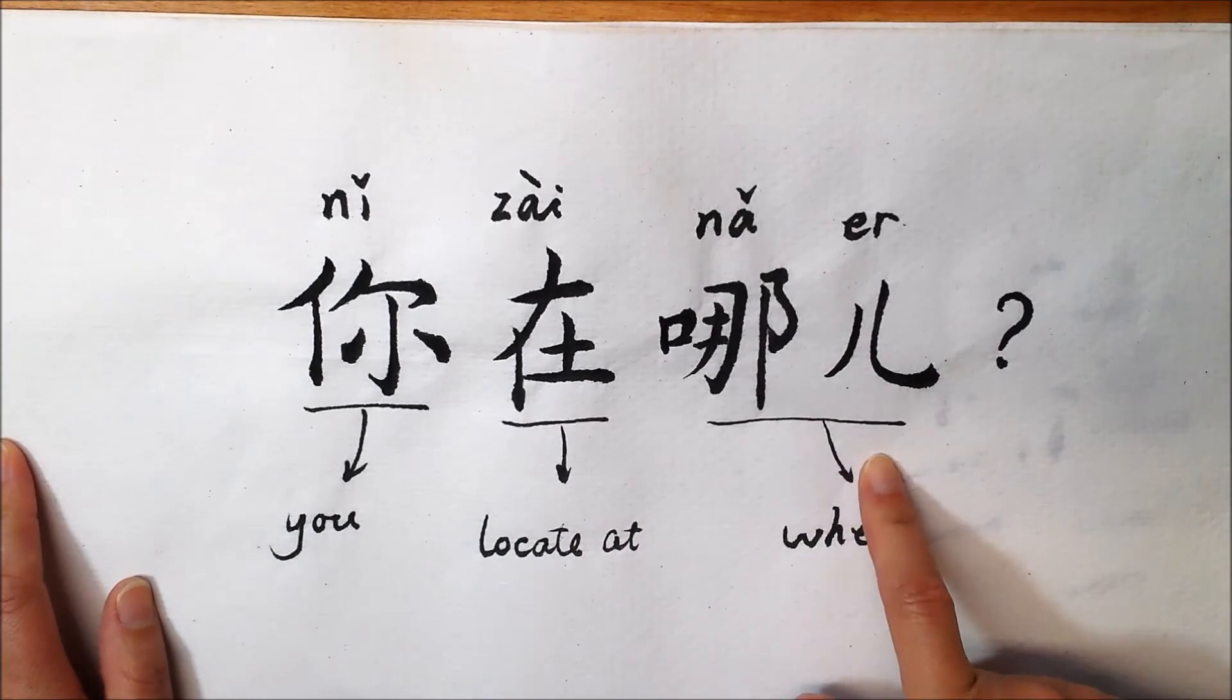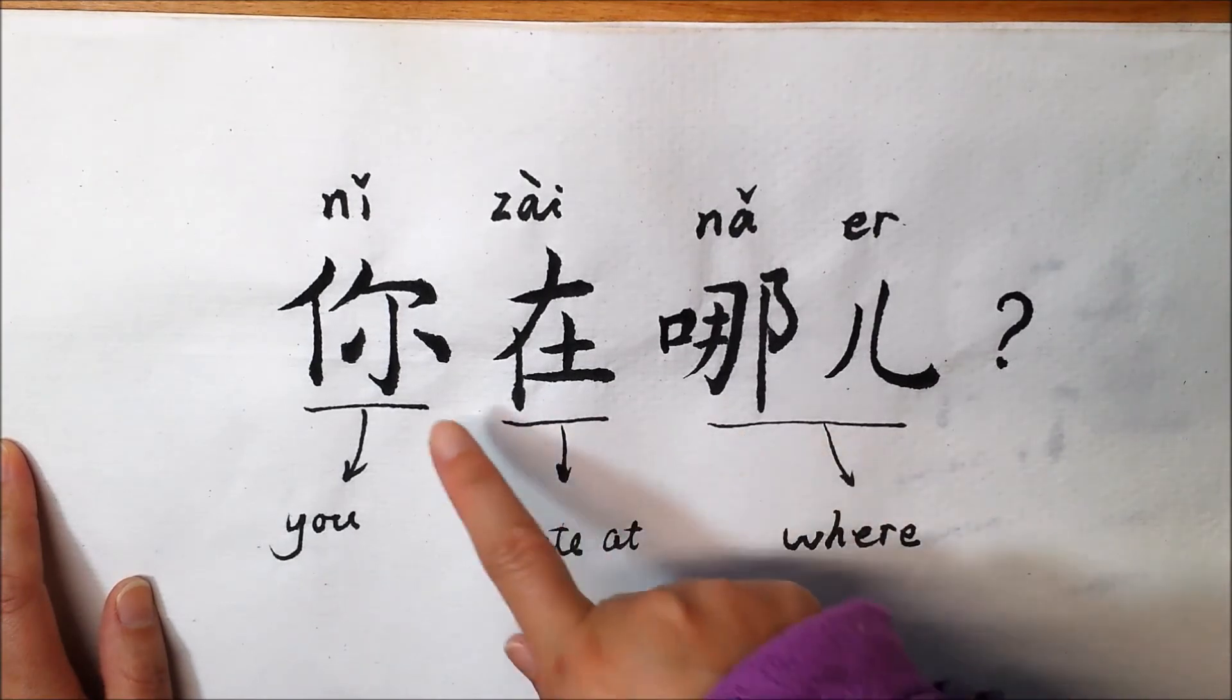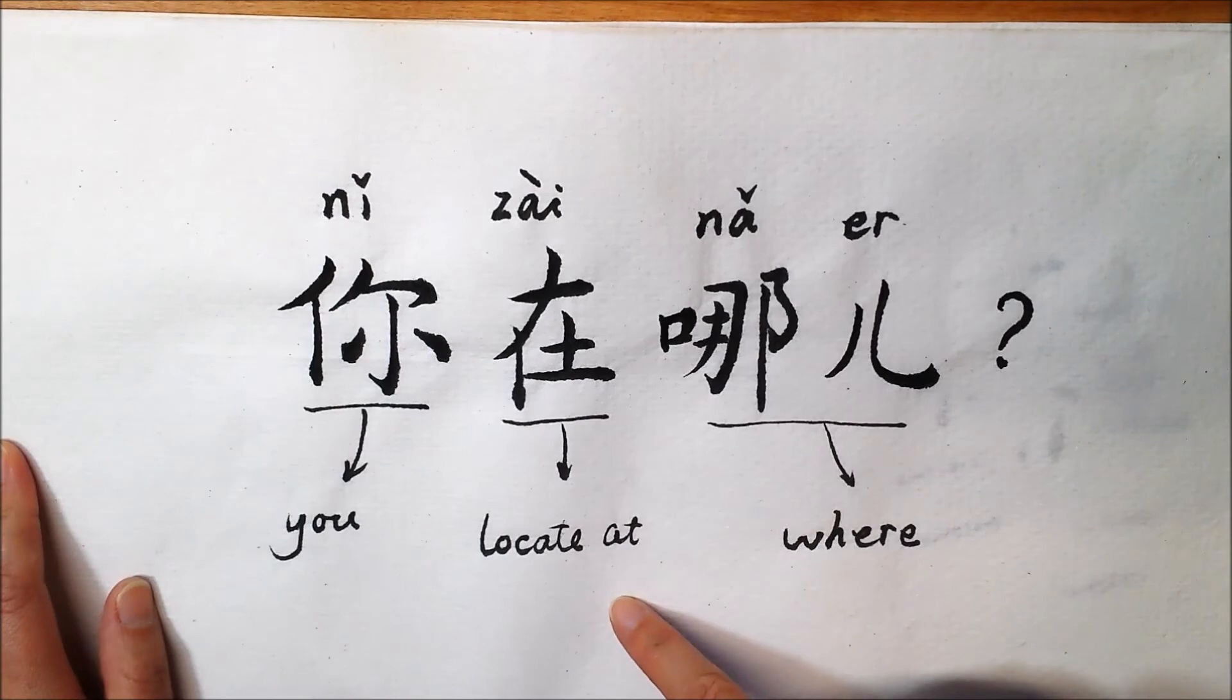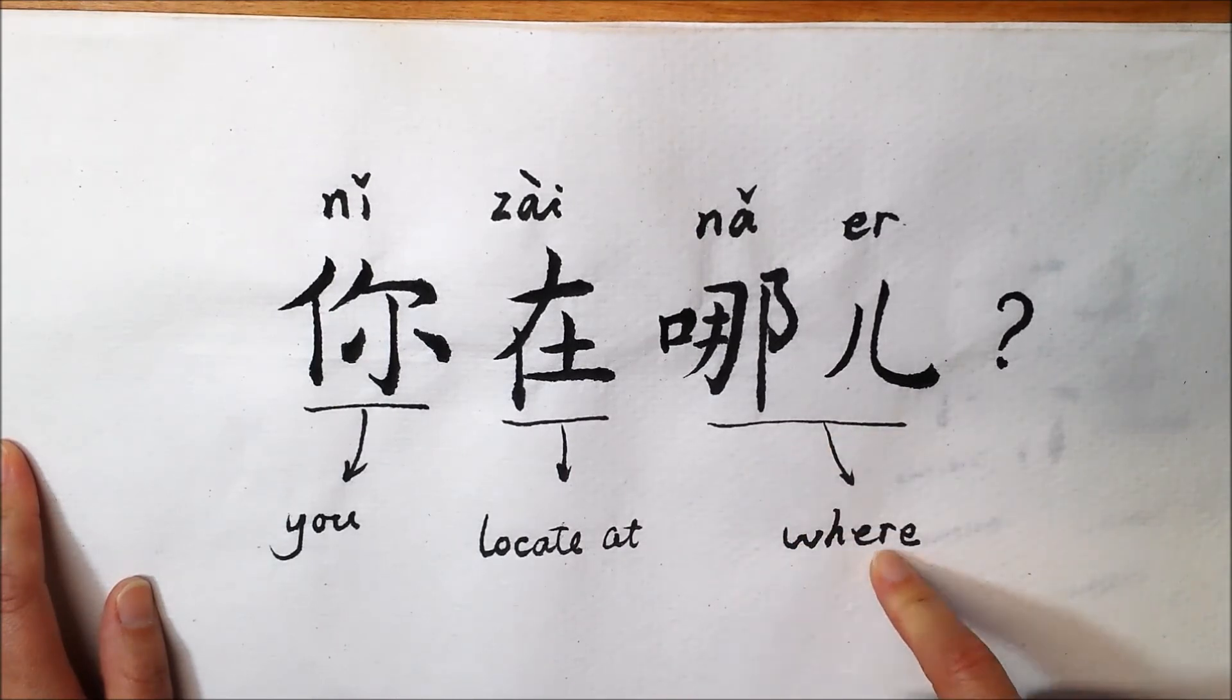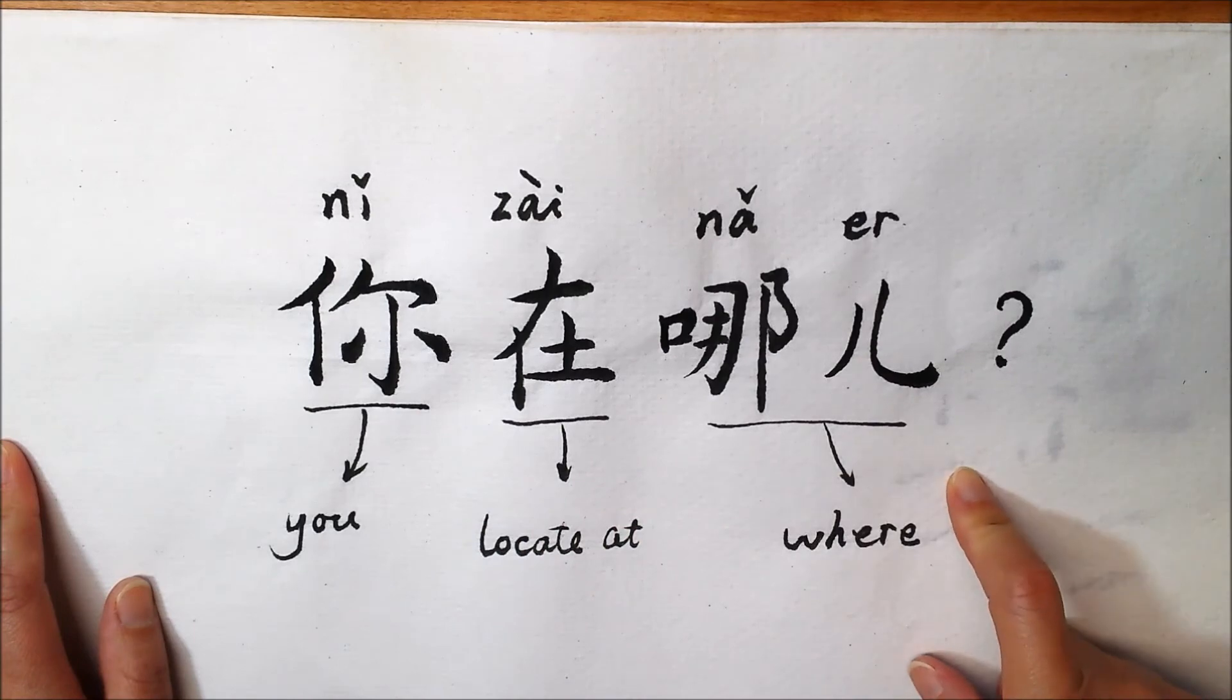你在哪儿? 你, you, zai, to locate at. 哪儿? Where? 你在哪儿? Where are you?